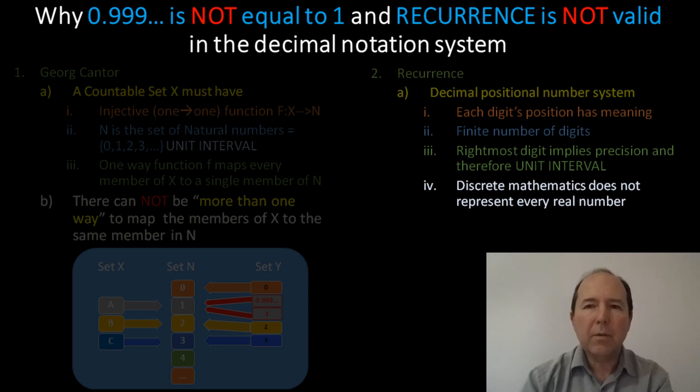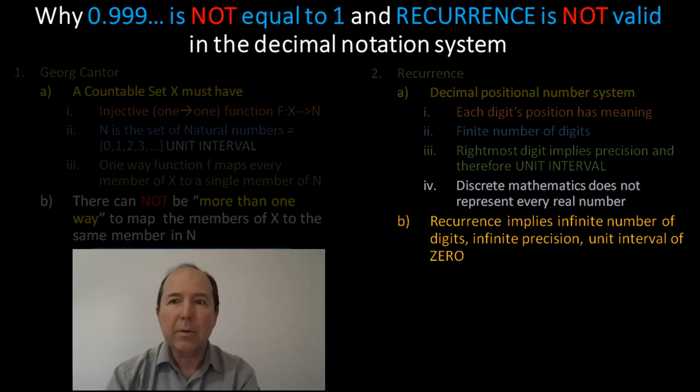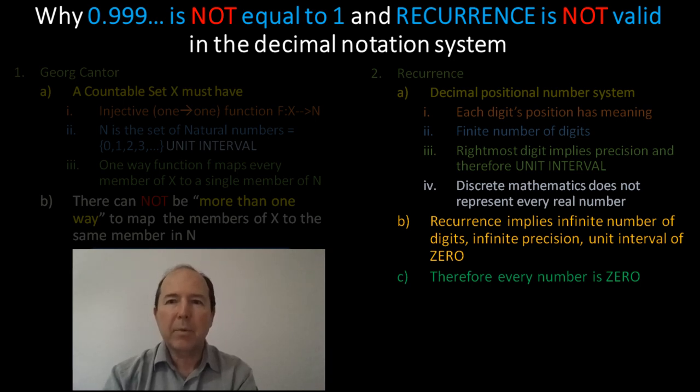Now, when the unit interval is 0, what you're left with is a number system in which every number in that set maps to 0, because the unit interval is 0. And, if every number is 0, then how can you count with it? So, again, there's no need for any further argument. I have proved by simple absurdity already that recurrence is not a valid representation in the decimal positional number system.